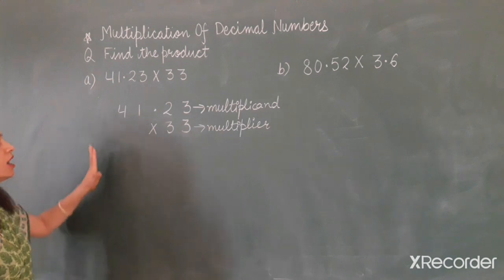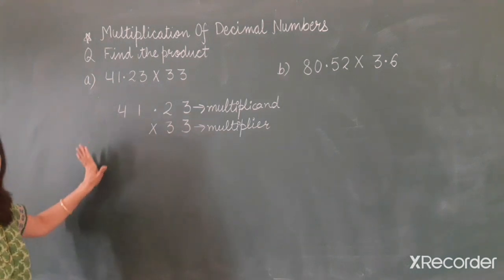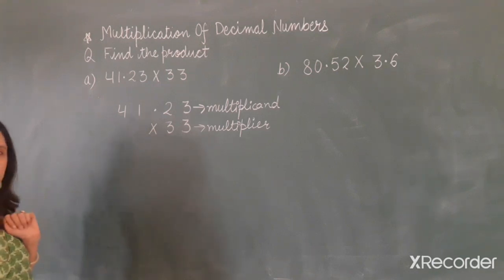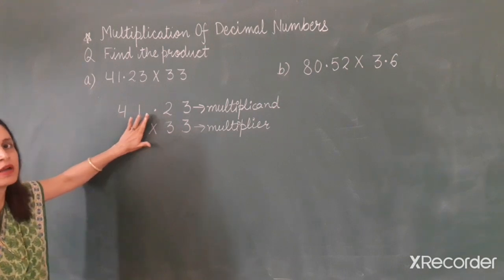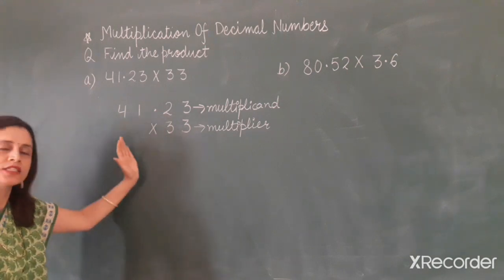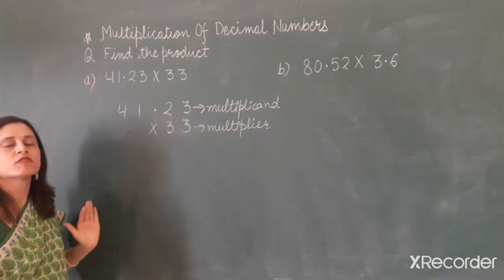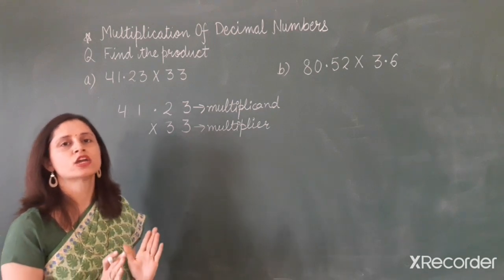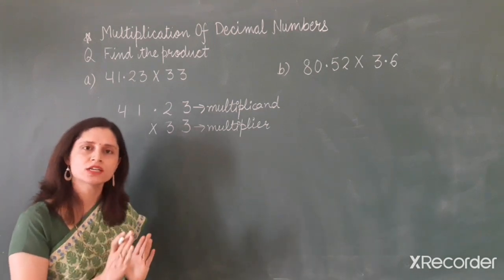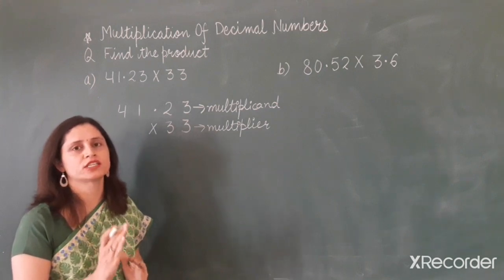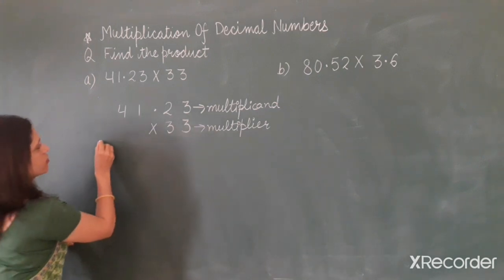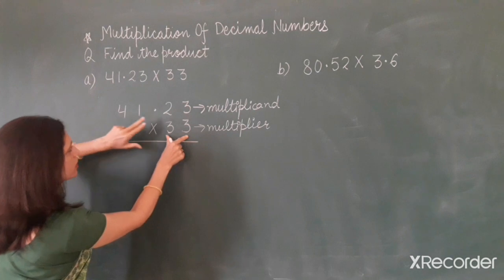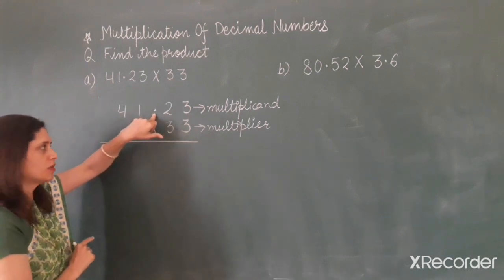The answer of the multiplication is known as the product. When we multiply a decimal number by a whole number, or a decimal number by a decimal number, we perform the multiplication in the same way as we multiply two whole numbers, without considering the position of the decimal point.